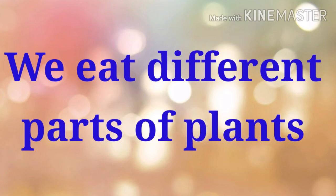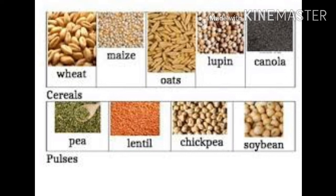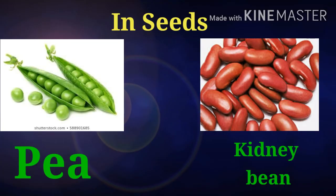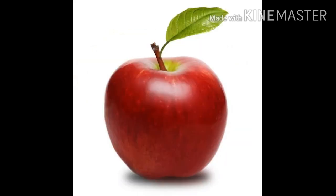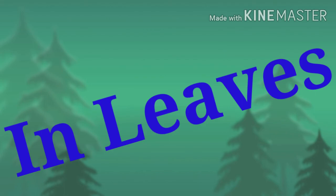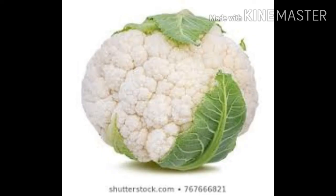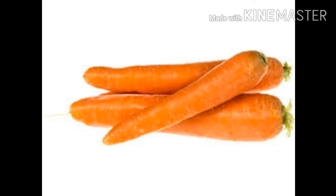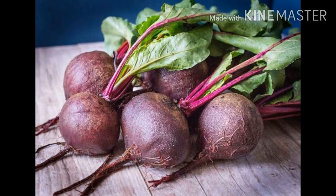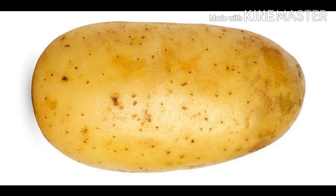We eat different parts of plants. When we eat fruits, vegetables, cereals, and pulses, we are eating different parts of plants. In seeds: pea and kidney bean. In fruits: grapes, oranges, apple, and mango. In leaves: cabbage and spinach. In flowers: cauliflower and broccoli. In roots: carrot, beetroot, and radish. Last but not the least, in stems we eat potato and ginger.